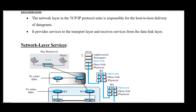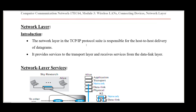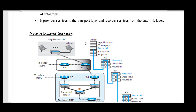The main functionality of the network layer is routing. Routing takes place based on IP addressing. We will see how routing works with an example.